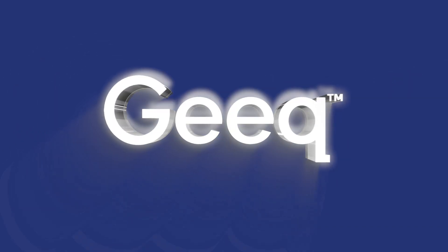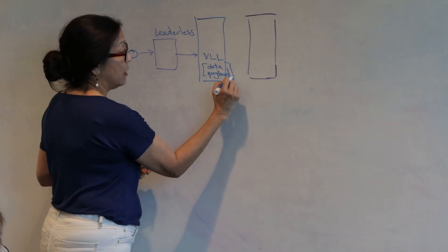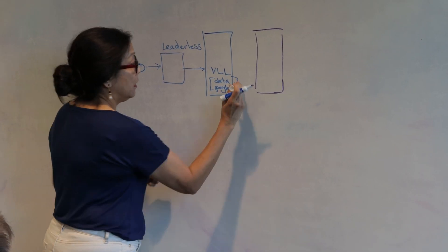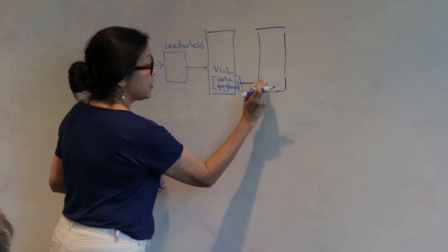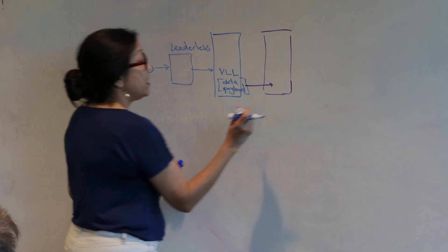Geek Data is a private blockchain solution that's designed to work with your data systems with a light touch. Data that's put on the blockchain can be ingested into your existing centralized data systems, but with that Geek Data layer, it still allows you to share that data in a way that is credible to all of your various partners.